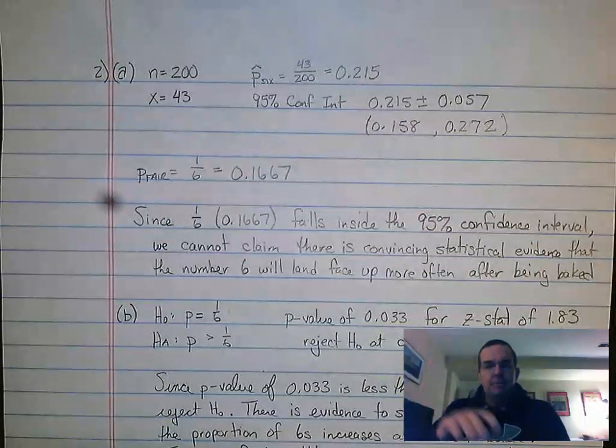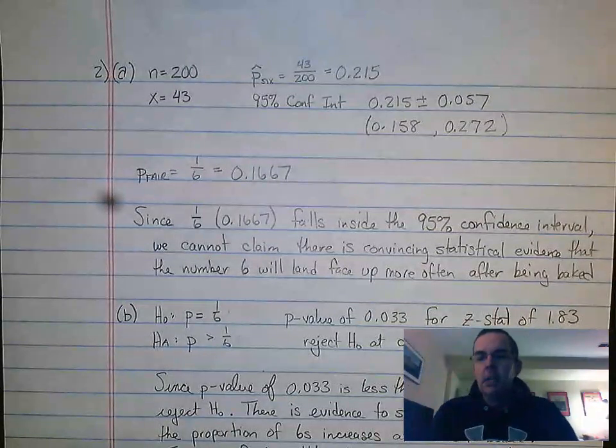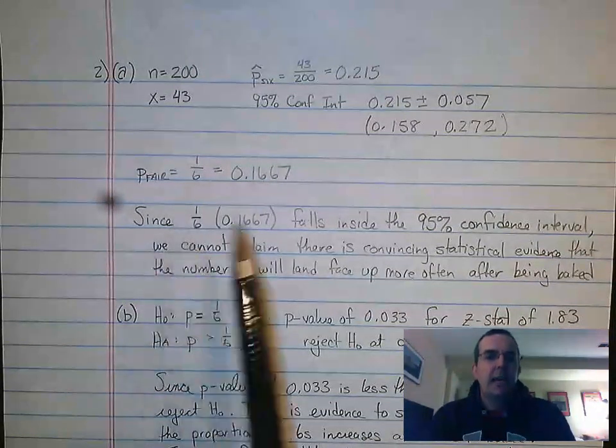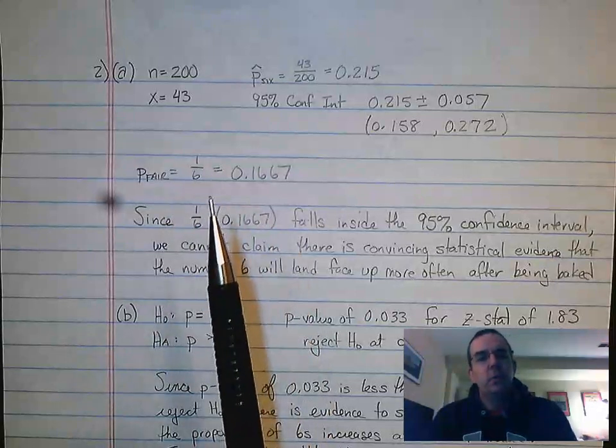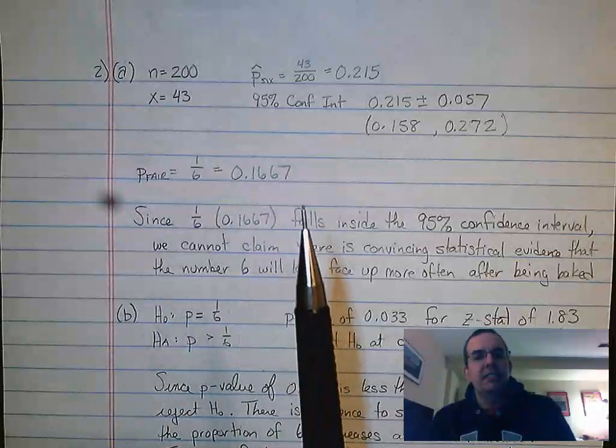The six was on top, so theoretically if it's heaviest on the bottom, the six should be on top more often. A fair die would have the six show up one out of every six rolls on average, so a proportion of 0.1667.